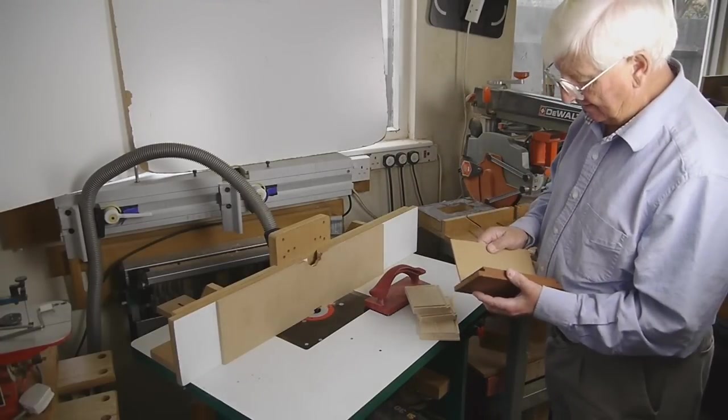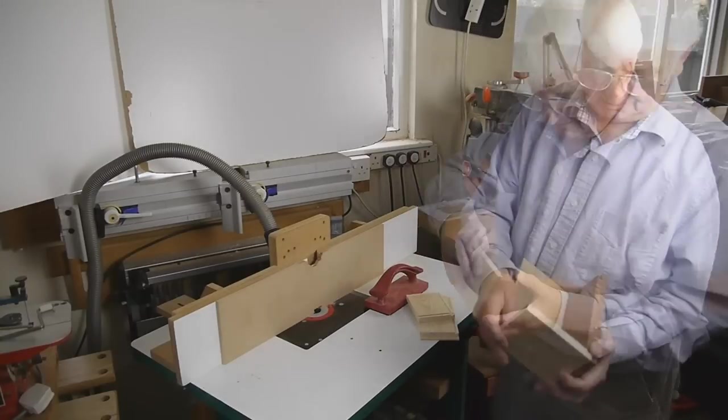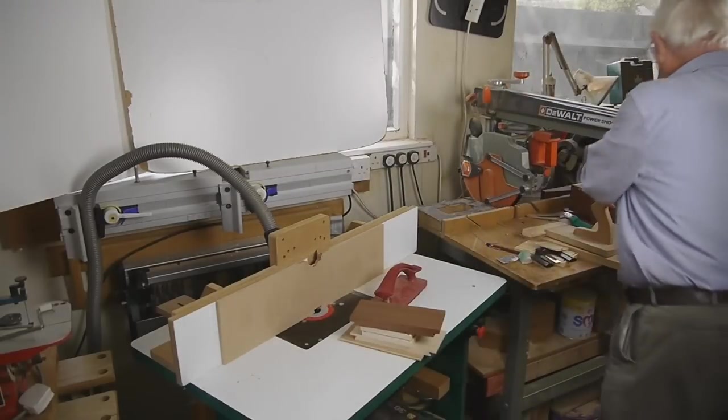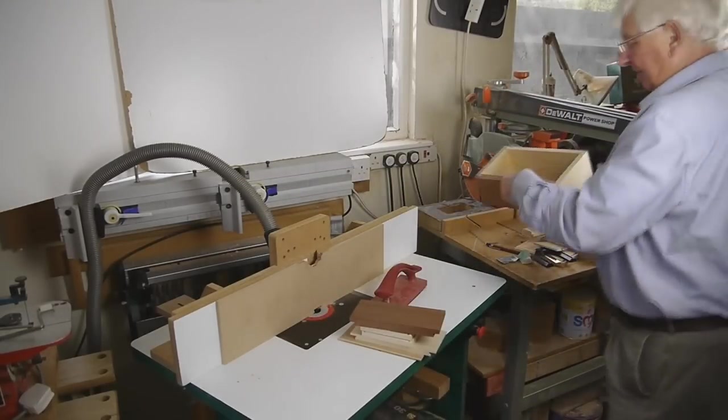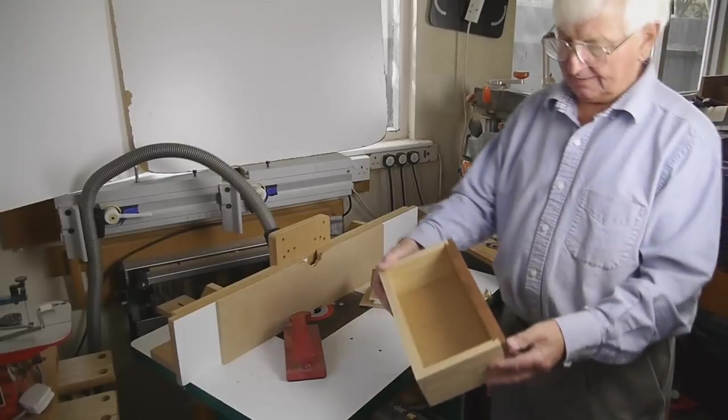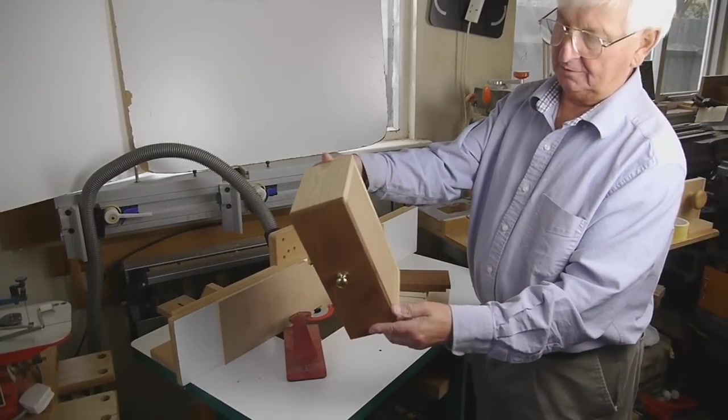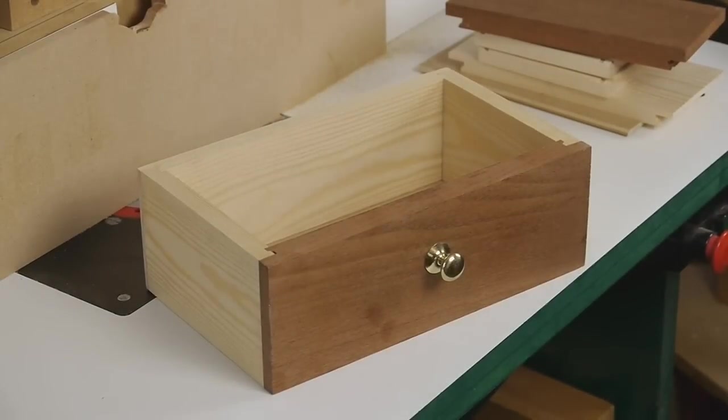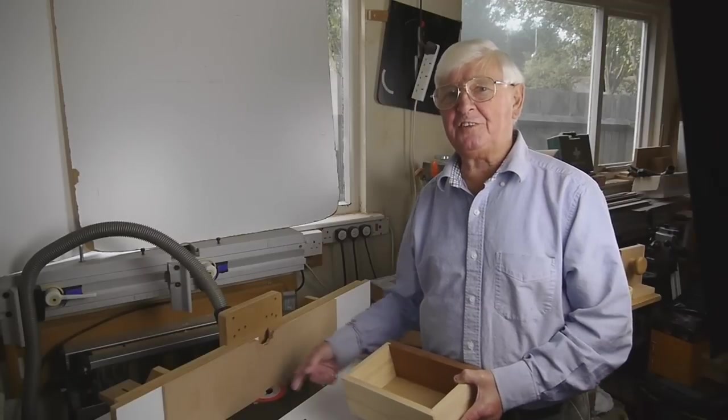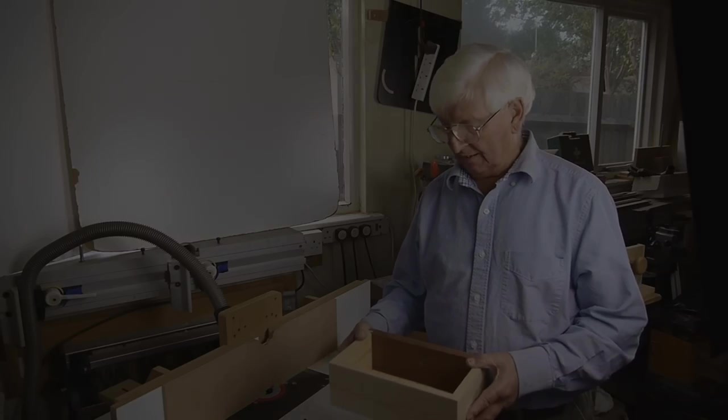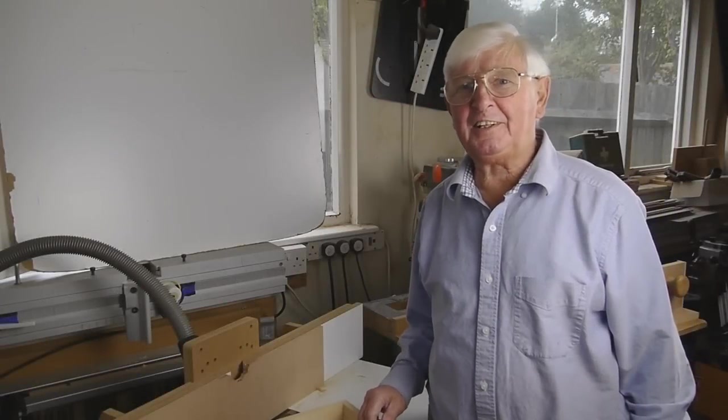We can then assemble our drawer, glue and clamp. And if I switch to the proverbial one I made earlier, here, this is slightly larger than the one I've just been making. But here is a completed drawer. So that shows the versatility and the ease and quickness of using this little lock corner cutter to make your drawers and boxes. Thank you for watching this video. We'll see you for the next one.